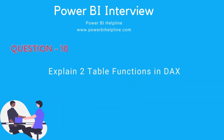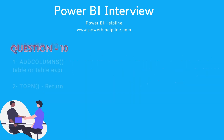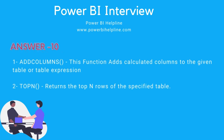Question number 10: explain two table functions in DAX. The first example is ADDCOLUMNS — this function adds calculated columns to the given table or table expression. The second is the TOPN function, which returns the top N rows of the specified table.